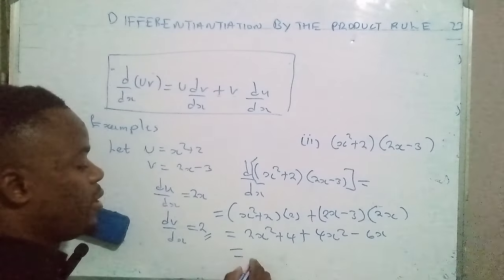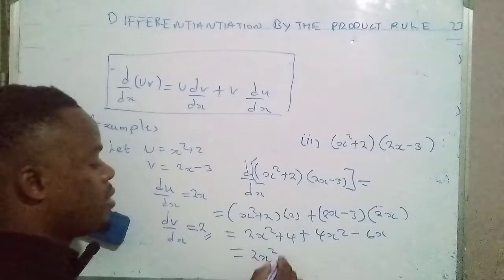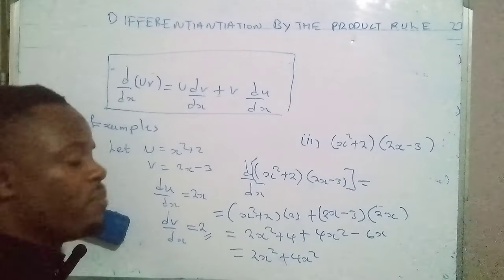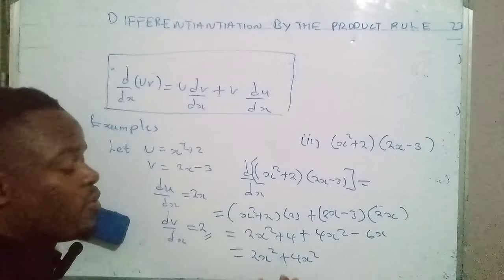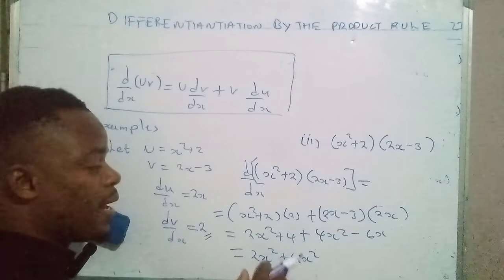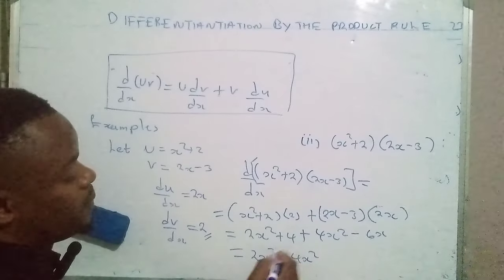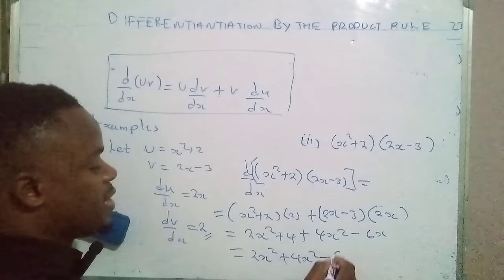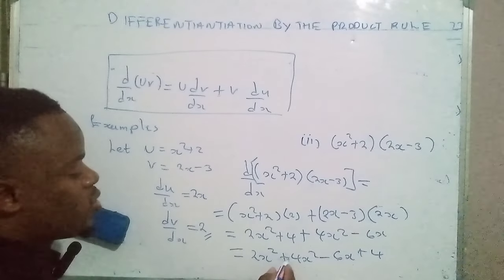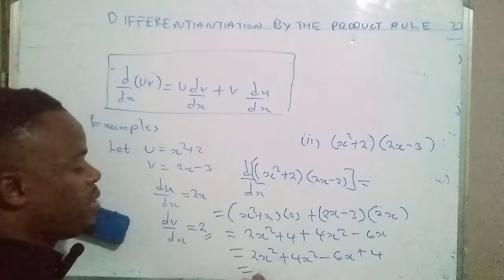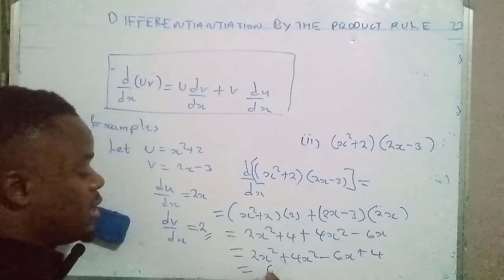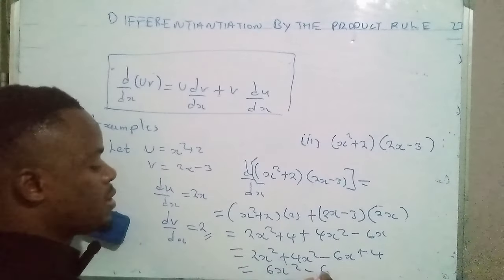After expanding, we collect like terms. We have 2x squared and 4x squared — variables with the same powers are like terms. We also have minus 6x and the constant four. Adding the coefficients: two plus four gives 6x squared, so the result is 6x squared minus 6x plus four.